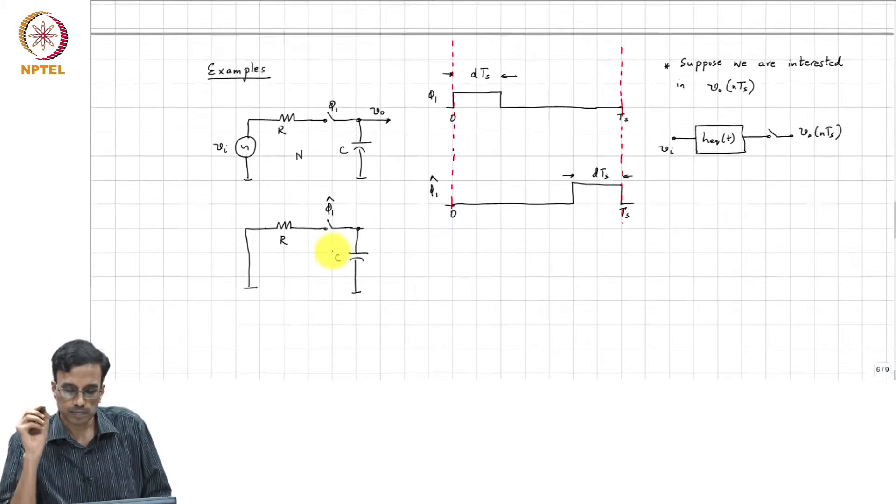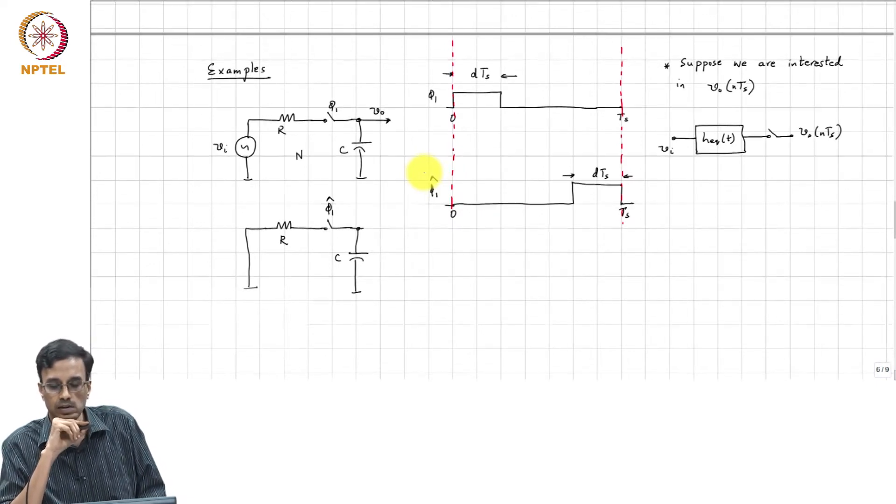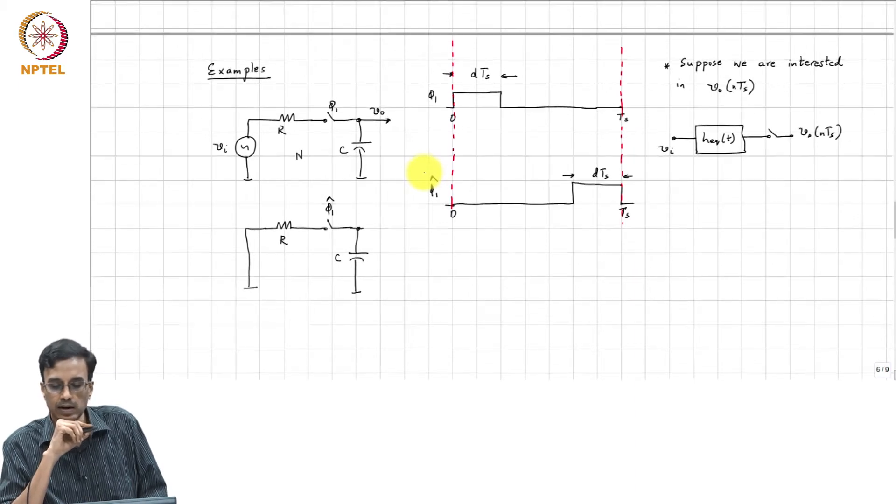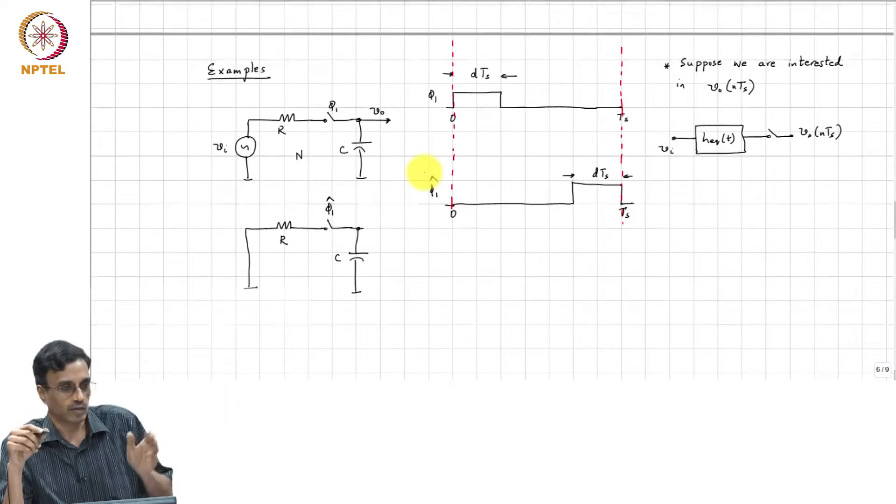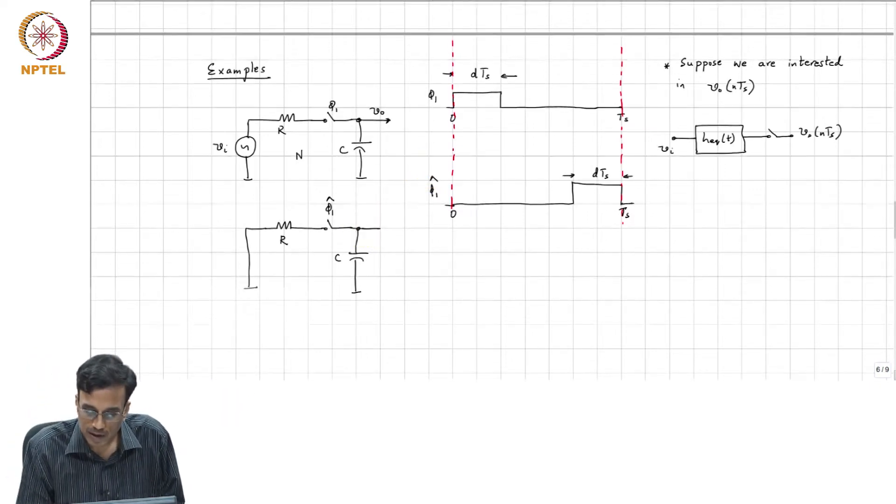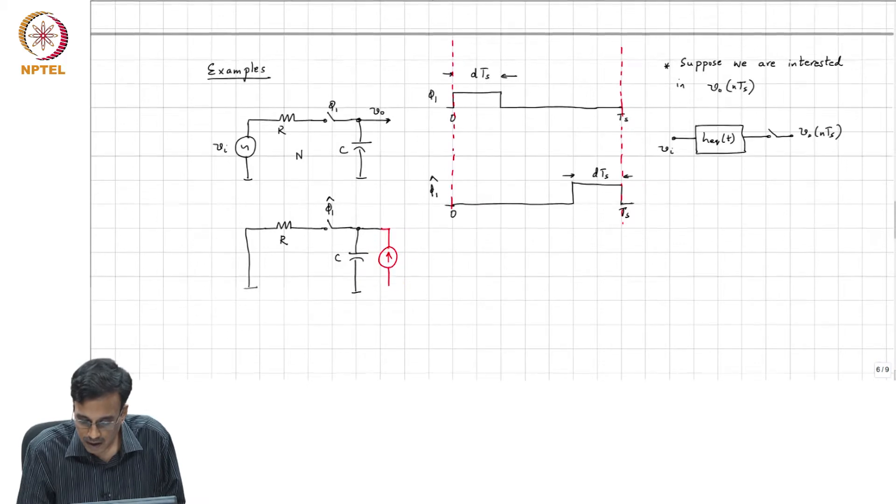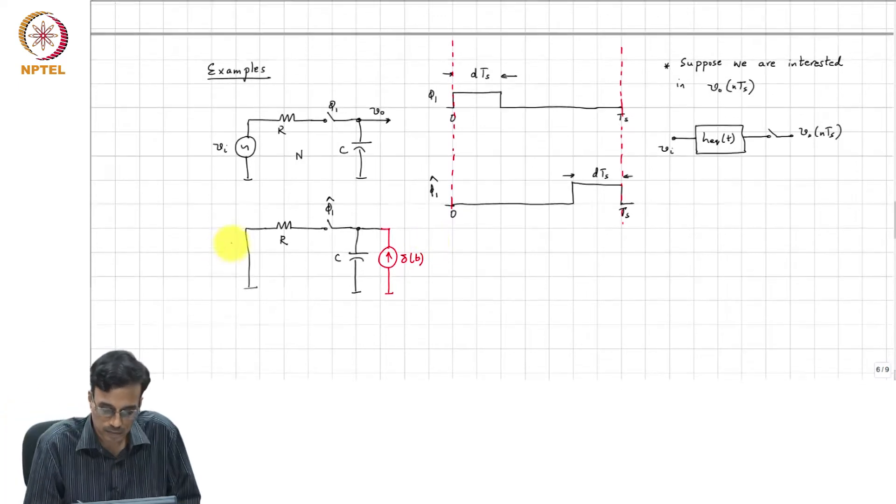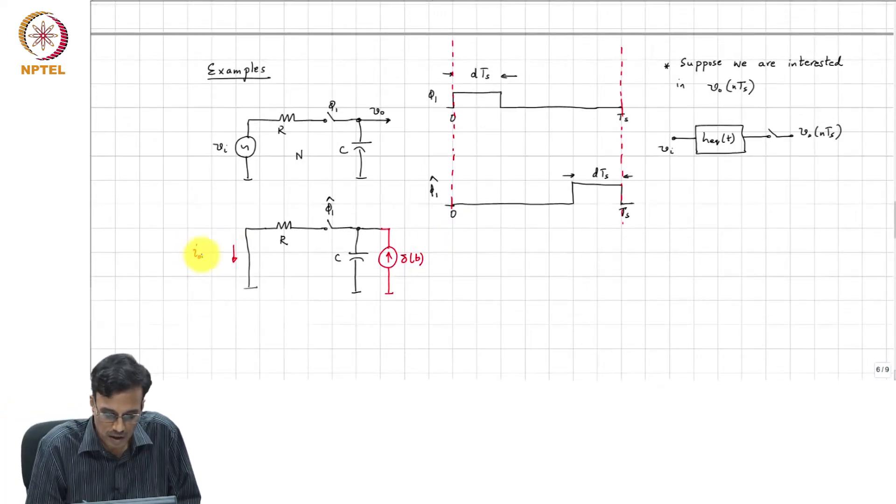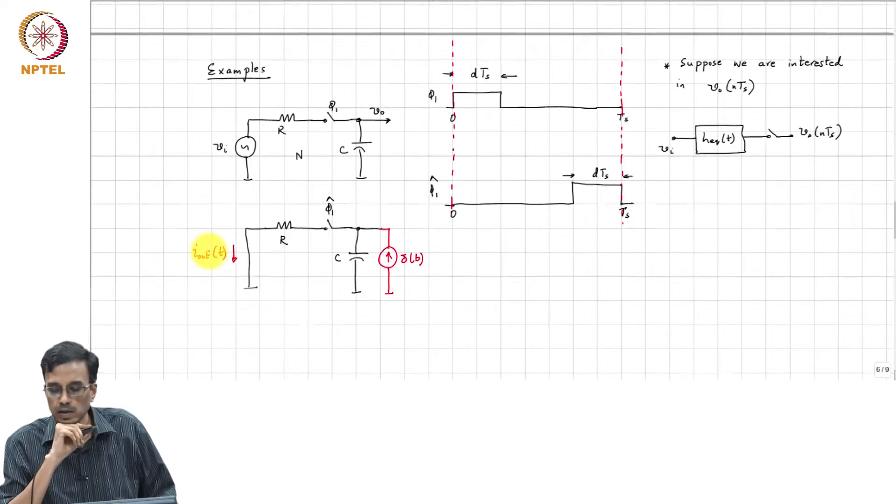And we are interested in the equivalent transfer function that is at the end of, at 0, Ts and so on. So, what should we do? We would basically like to inject an impulse current delta T and measure the output current I out of T.